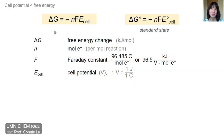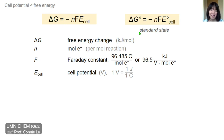This important thermodynamic relationship between the free energy change and the cell potential also works for the standard state. In that case, you'll use ΔG° with E°, the cell potential at standard state.